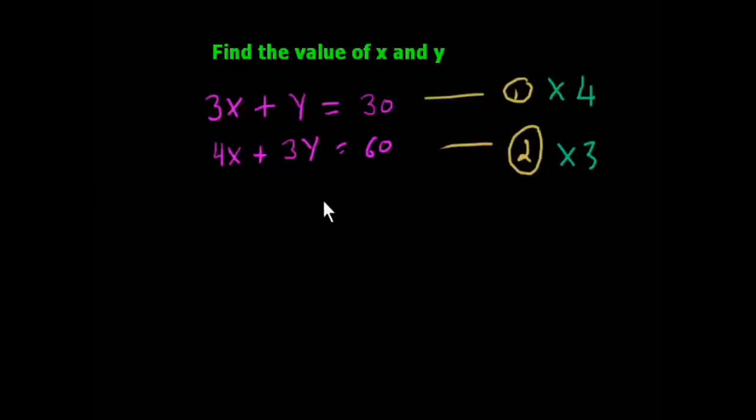I am writing 3x into 4, 12x plus 4y, 4 into y. Now multiply with 30, 120. Now second equation, multiply with 3, 4 into 3 is 12, plus 3 into 3 is 9y, 60 into 3 is 180.